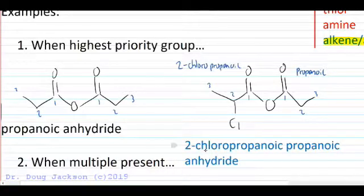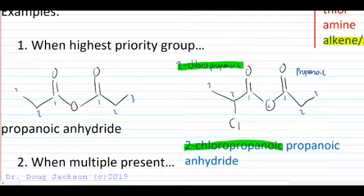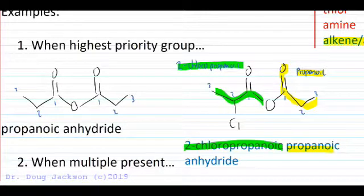Anytime you have an unsymmetrical anhydride, you just name each side as its own carboxylic acid, and then put the names together in separate words, alphabetical order, followed by a separate word, anhydride, at the end.